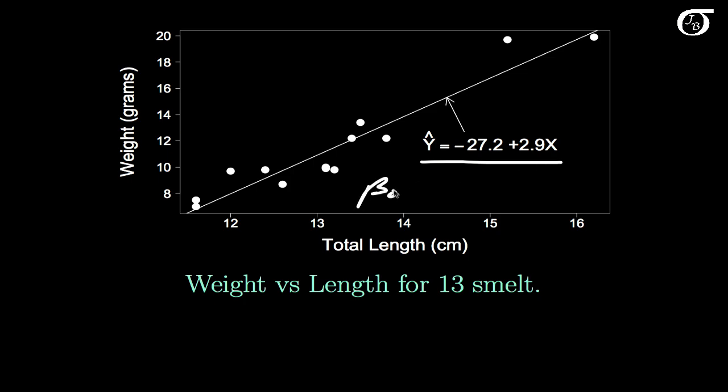Beta0 hat, our y-intercept from the sample, is equal to minus 27.2. This is the estimated mean weight for a smelt that has a length of 0 centimeters. Does that make any sense from a practical viewpoint?